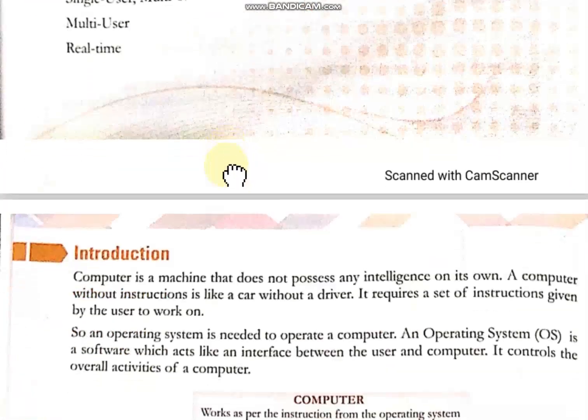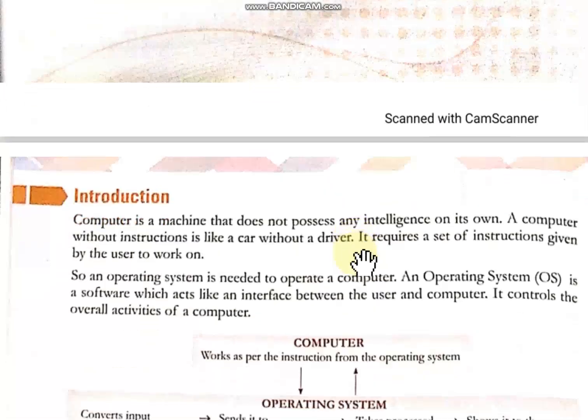Introduction. What is an operating system? An operating system is an interface between the user and the computer. Have you ever seen a car without a driver? I am sure no. Similarly, the operating system acts as a driver for the computer. So without an operating system, you cannot operate the computer. It is required to operate a computer, and that is why it acts as an interface between user and computer.